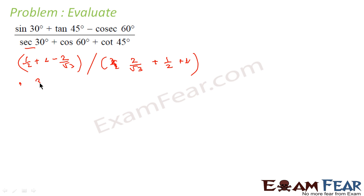Now to just solve it: 1/2 plus 1, 3/2 minus 2/√3, correct. This becomes 5 divided by 3/2 plus 2/√3.